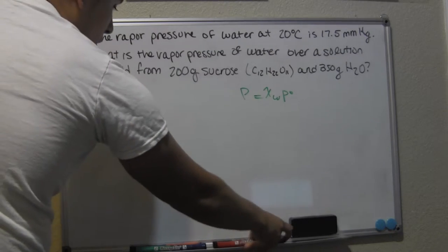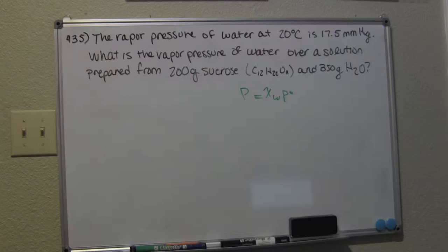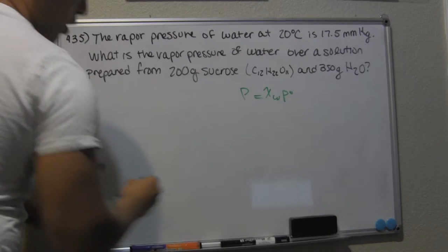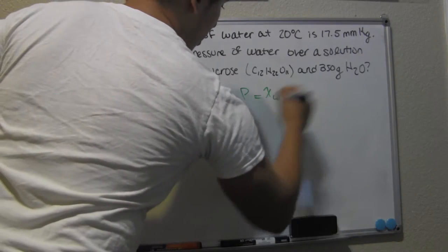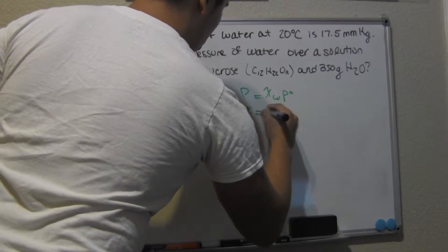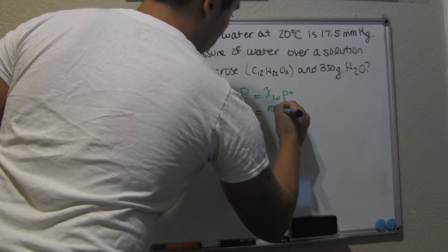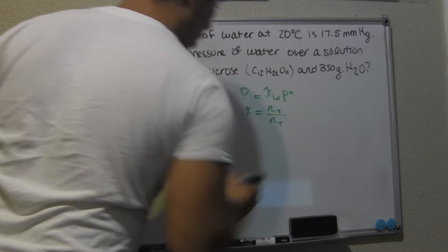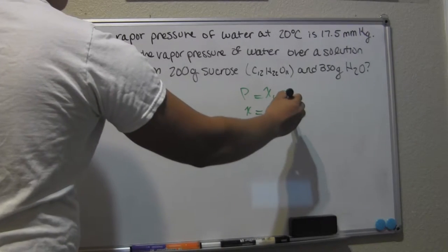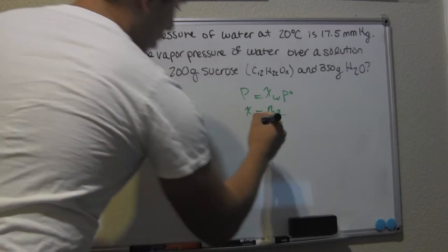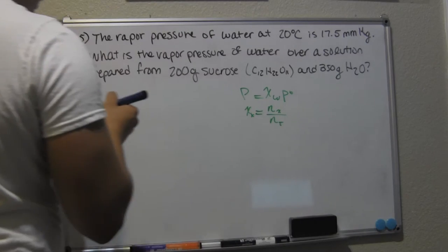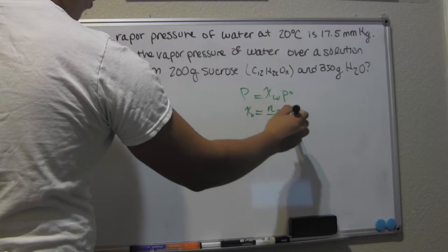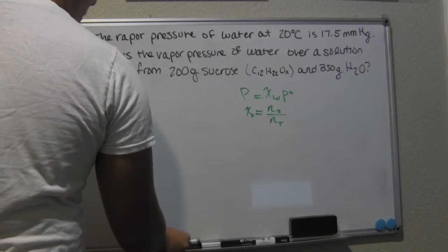The first step into solving this equation is to find the mole fraction. The mole fraction of X is equal to N of whatever you're talking about — N_X — over N total. So if you're looking for the mole fraction of water, it's going to be the moles of water over the total moles present.